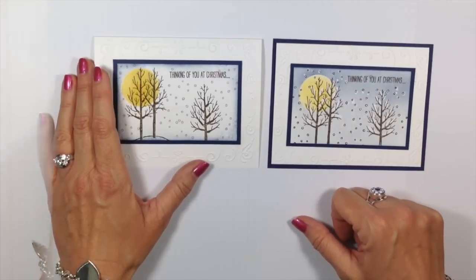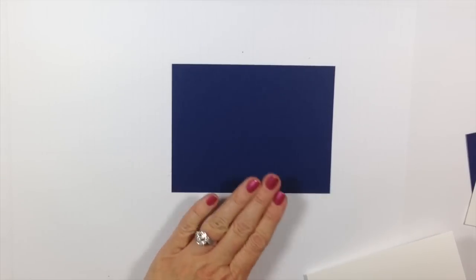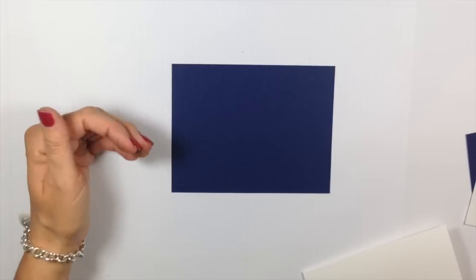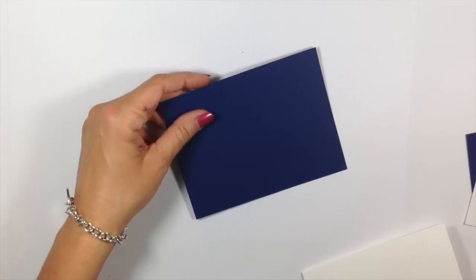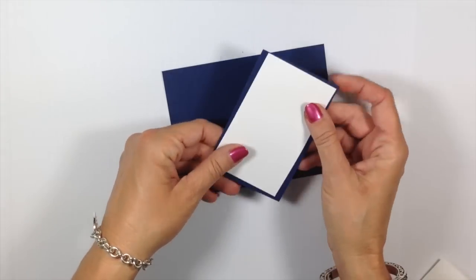Now we're going to be creating the Wow version. My cardstock pieces for today: I have a piece of Night of Navy that is cut five and a half by four and a quarter, so it's a quarter size sheet of Night of Navy.